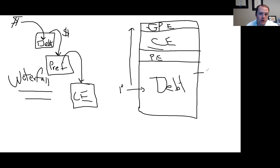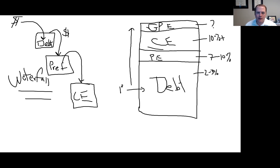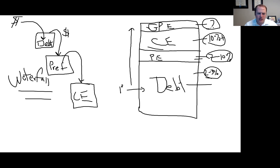Private equity can be closer to about seven to ten percent depending on the deal. Common equity will have an opportunity to be higher than that — let's say ten percent plus, because it's going to participate in the upside. Then you have GP equity, which is dependent upon how well the deal performs. The higher the return, the higher the risk; the lower the return, the lower the risk. The debt has the lowest risk so it gets paid the least, and the GP, depending on what they put into the deal, could have a pretty significant return because they're putting in sweat equity.